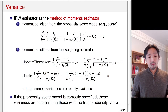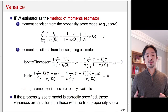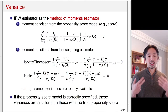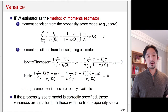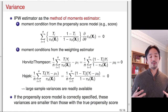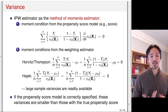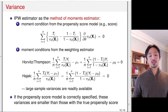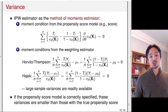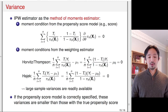If the propensity score model is correctly specified, it has been shown that the resulting variances are smaller than those obtained using the true propensity score. This is an interesting result: the estimated propensity score gives better efficiency than the true propensity score, because it accounts for some of the sampling variability in the data — you learn more information from the data than just specifying the true propensity score. Of course, if the model is incorrectly specified, the resulting estimator might be biased and the efficiency gain may not exist.